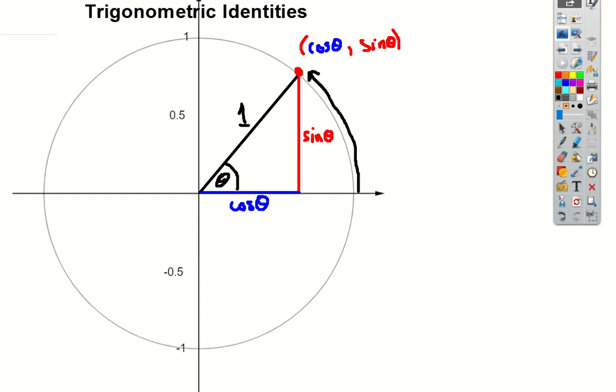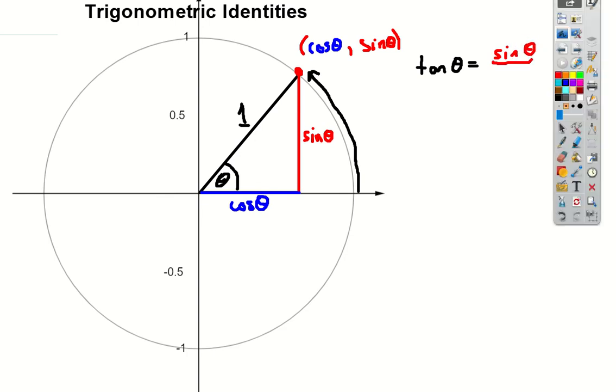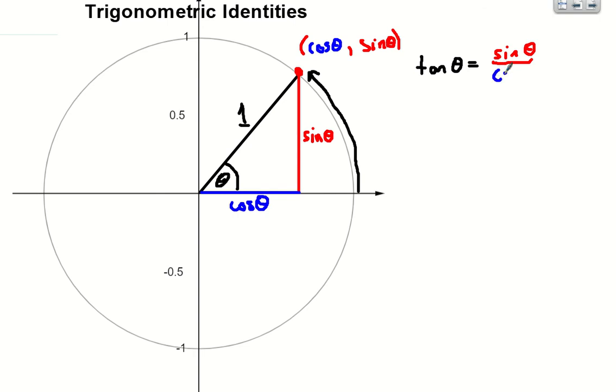One of them is one that we've already seen. So if I was to look at what tan theta is going to be, then by the definition of tan, we know that it's opposite over adjacent. So by definition, tan theta turns out to be sine theta divided by cos theta. So that's one identity that links all three of the trig functions that we know together.